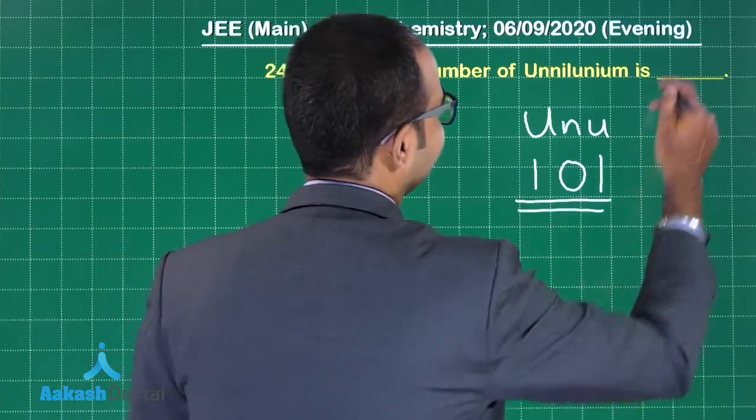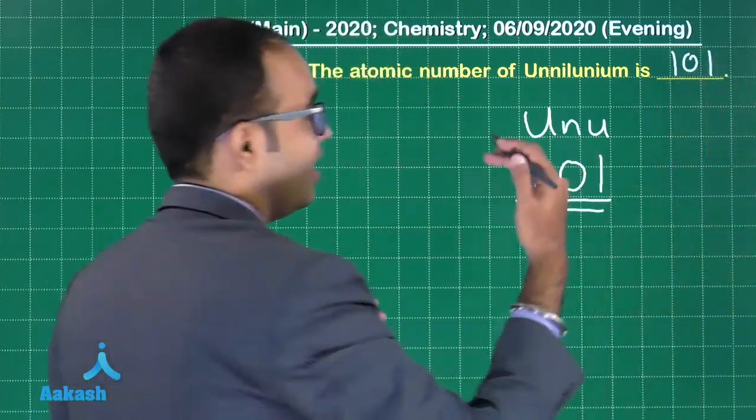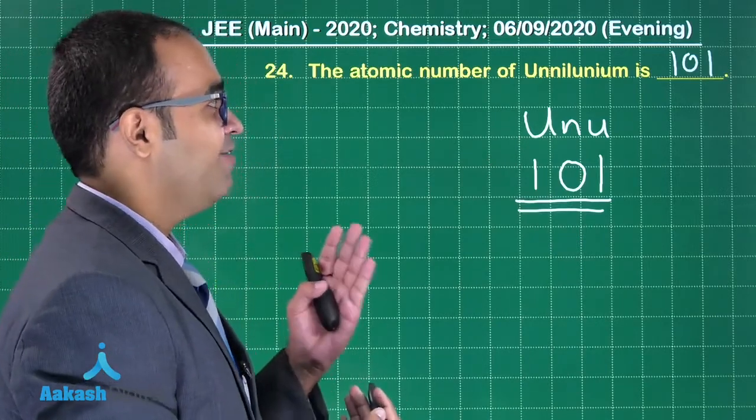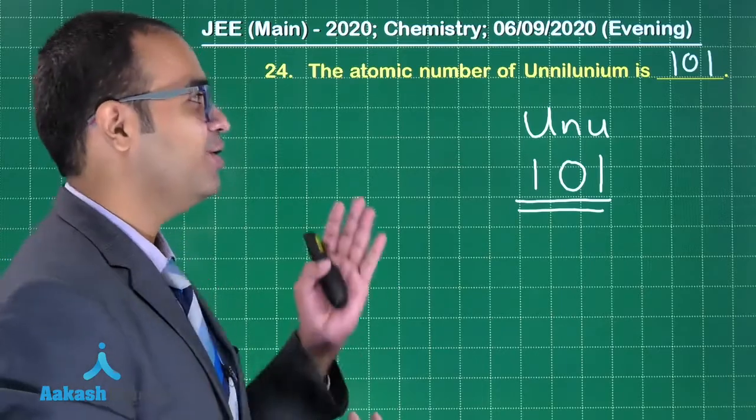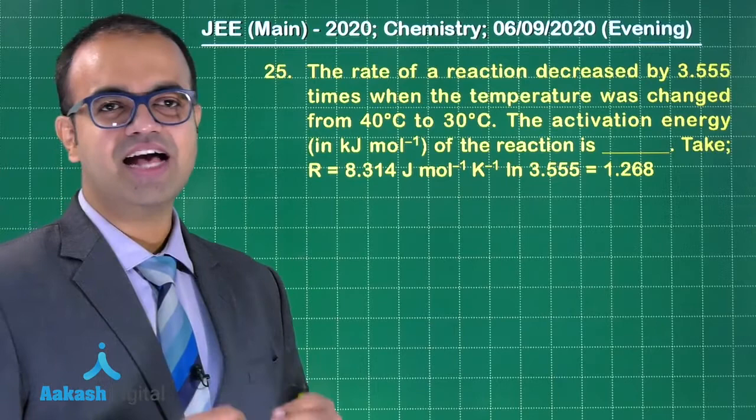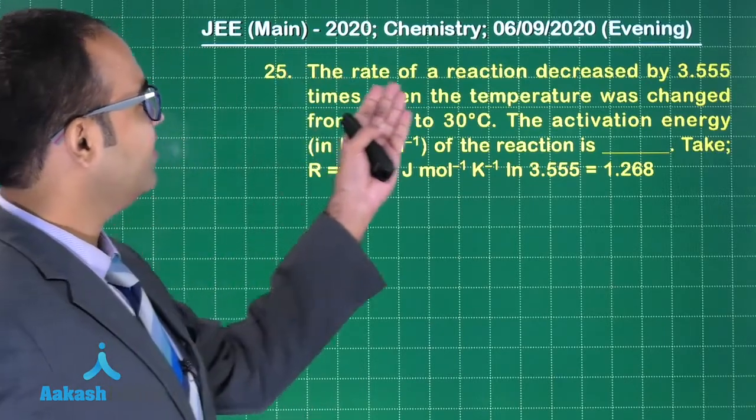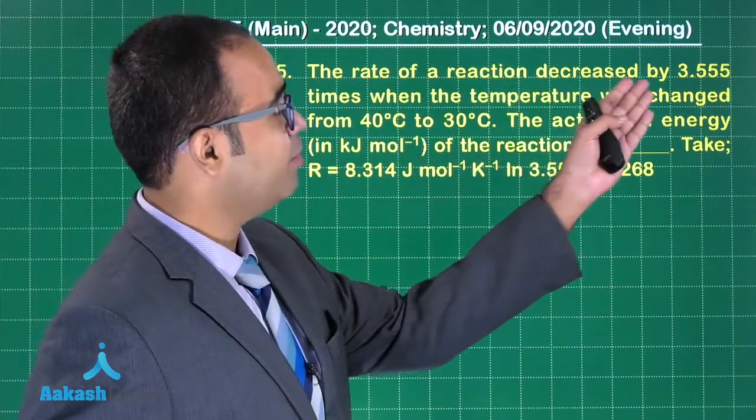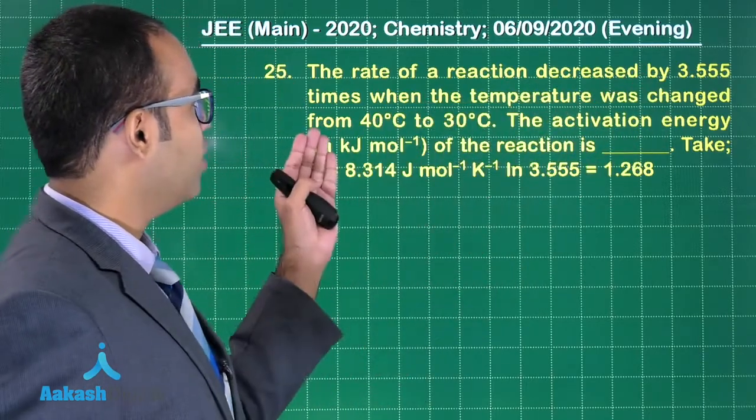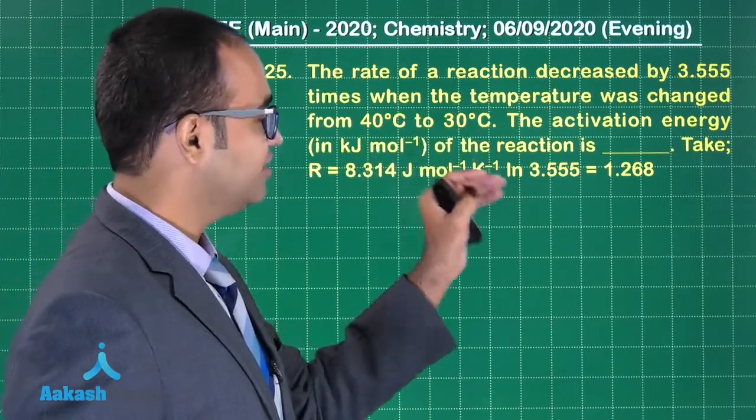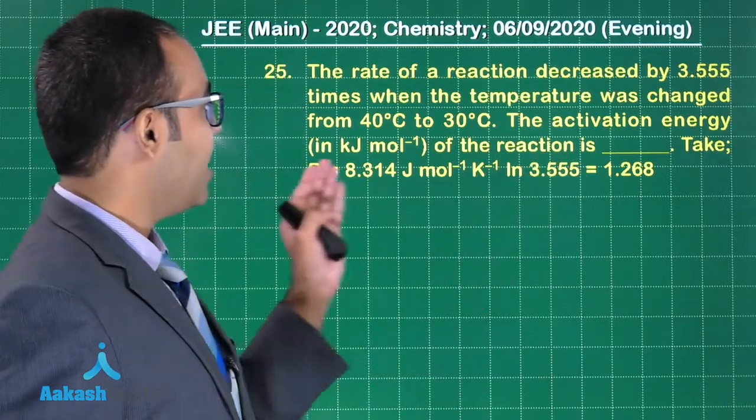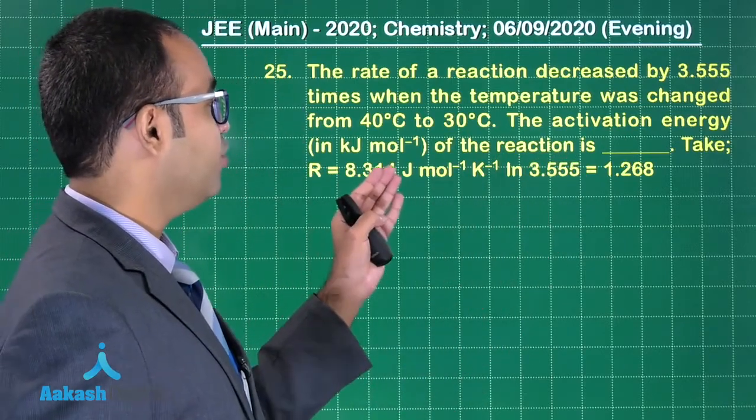So the answer is 101. Hard to believe but a very easy question. If you have studied the periodic table well, you can easily write the answer. Let us solve question number 25, the last question. The rate of a reaction decreased by 3.555 times when the temperature was changed from 40°C to 30°C. The activation energy of the reaction is? Take R = 8.314 J mol⁻¹ K⁻¹, ln(3.555) = 1.268.